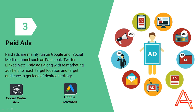The first type of paid ad is pay-per-click ads. These ads are a popular form of online advertising where advertisers pay each time a user clicks on one of their ads. PPC ads are typically displayed at the top of search engine results pages and are a great way to drive traffic to your website. To create a successful PPC campaign, you need to conduct thorough keyword research and create relevant ad copy that will encourage users to click on your ad. You can also use PPC ads to target specific demographics, locations, and devices.